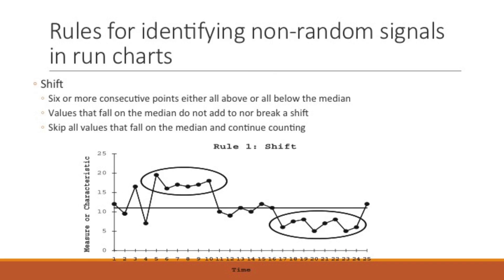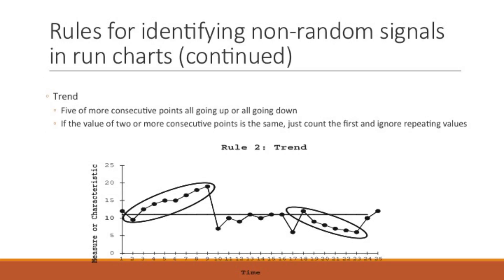There are some rules for how you identify non-random signals in run charts, or special cause variation. The first rule is about shift: six or more consecutive points either all above or all below the median. Values that fall on the median do not add or break a shift — we skip them and continue counting. The second rule is about trend: five or more consecutive points all going up or all going down. If two or more consecutive points have the same value, count the first and ignore the repeating values.